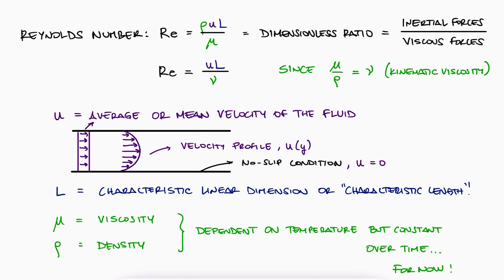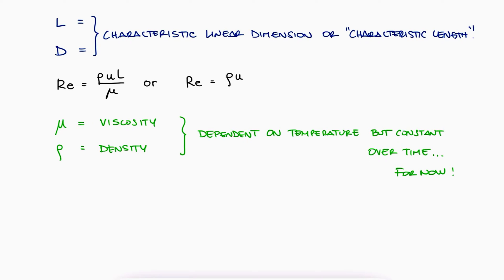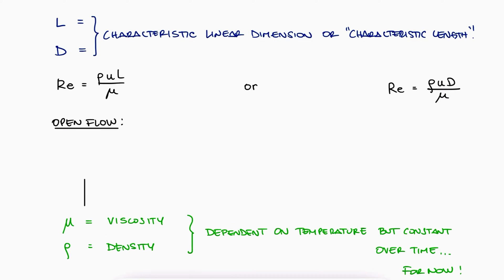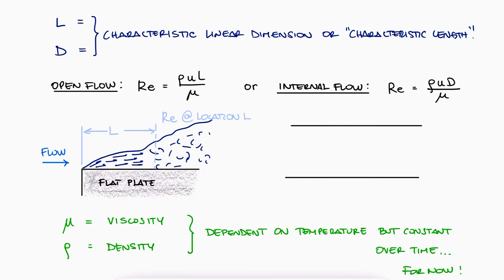The characteristic length can be written as L or D. For open flow situations, such as fluid over a flat plate, the characteristic length L is the distance from the beginning of the plate's surface to where we're calculating the Reynolds number. For fluid flowing inside a pipe, the characteristic length D refers to the pipe diameter.